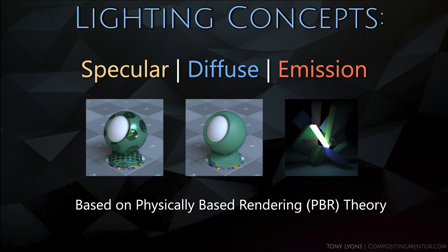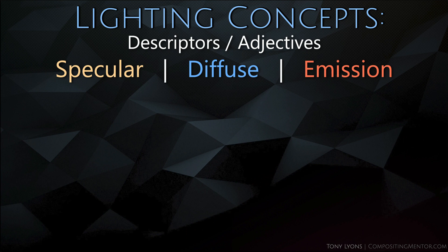I realize that this is the CG compositing series, but I'd be doing an injustice if I didn't explain the concepts of diffuse, specular, and emission, because if you don't know what you should be looking for, you won't know which category to put the pass in. Everything I'm going to be talking about is based on physically-based rendering theory, also known as PBR — a more scientific approach towards rendering, shading, and lighting.